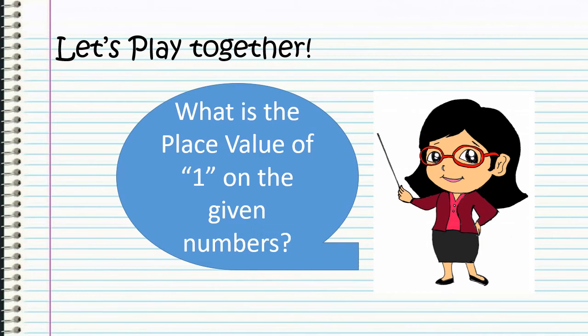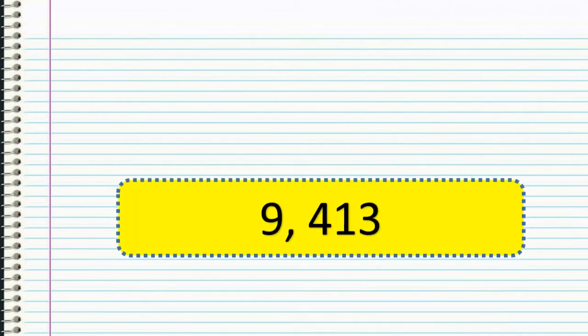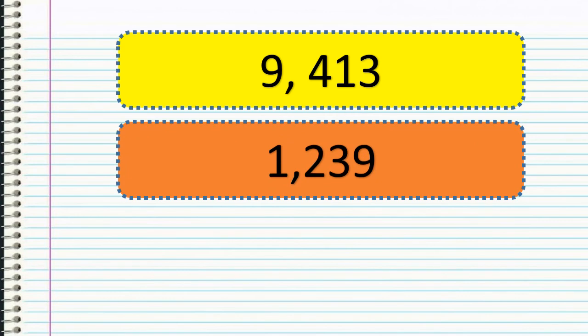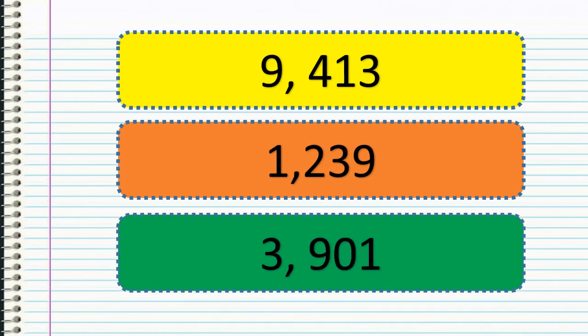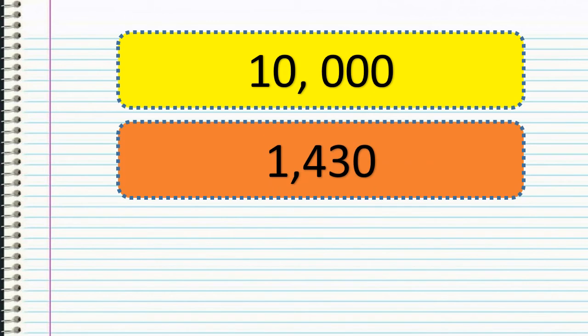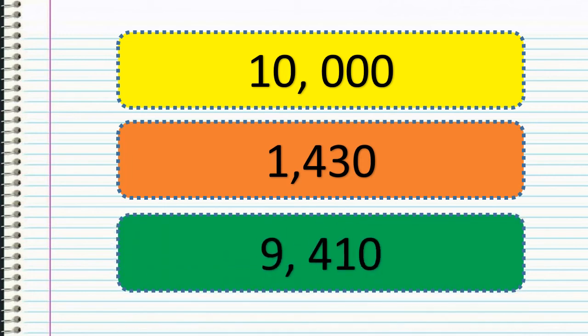Now let's try to find the place value of the digit 1 in the given numbers. What is the place value of 1 in 9,413? It's tens. How about in 1,239? The place value of 1 is thousands. How about in 3,901? The place value of 1 is ones. How about in 10,000? The place value of 1 is ten thousands. How about in 1,430? The place value of 1 is thousands. And in 9,410? The place value of 1 is tens.